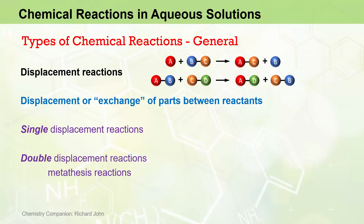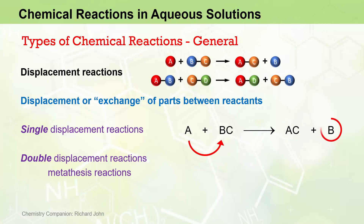For single-displacement reactions, we saw that one element reactant A effectively displaces a part of another reactant B to produce a compound AC, whilst also liberating the element B.